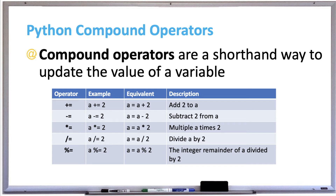In Python, compound operators are a shorthand way to update the value of a variable. For example, instead of saying 'a = a + 4', you could write 'a += 4' to add 4 to the variable a. There are also shorthand compound operators for subtraction, multiplication, division, and modulo.